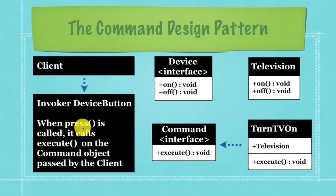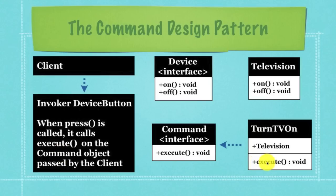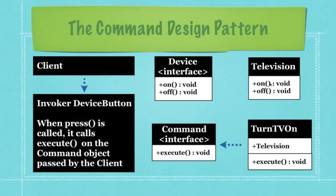Device button is called — specifically press, a method inside of it. Then execute is called on another object called the command object. Whenever execute is called, all it does is say: my job as an object is to turn televisions on. So what I'm going to do is tell the television object to execute the method on that is inside of it.